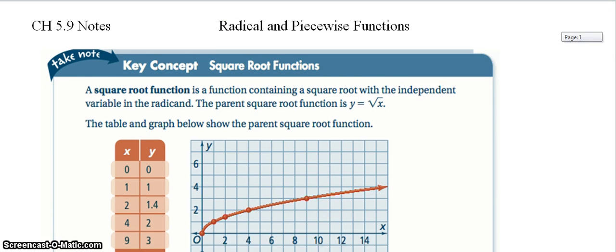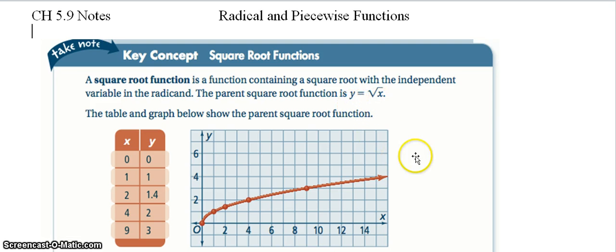So our standard square root function here is that y equals radical x, and again radical is the exact same thing as square root. So square root of 1 is 1, square root of 4 is 2, square root of 9 is 3, and we go on up from there.